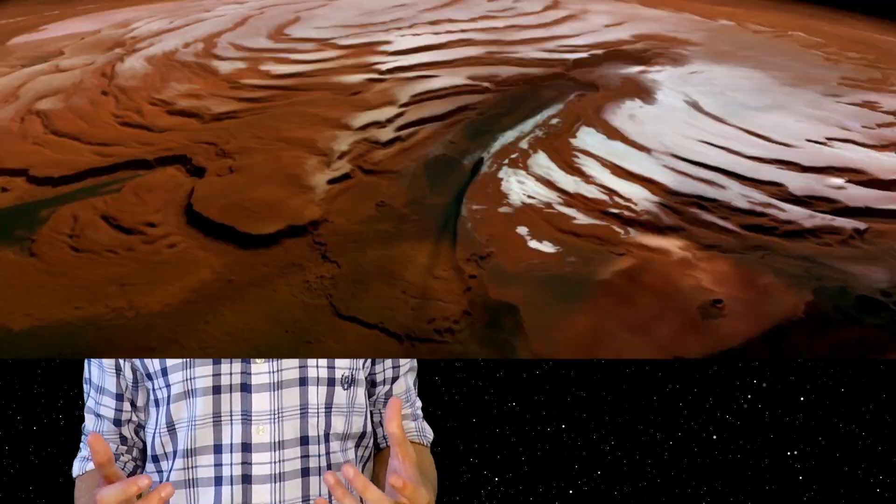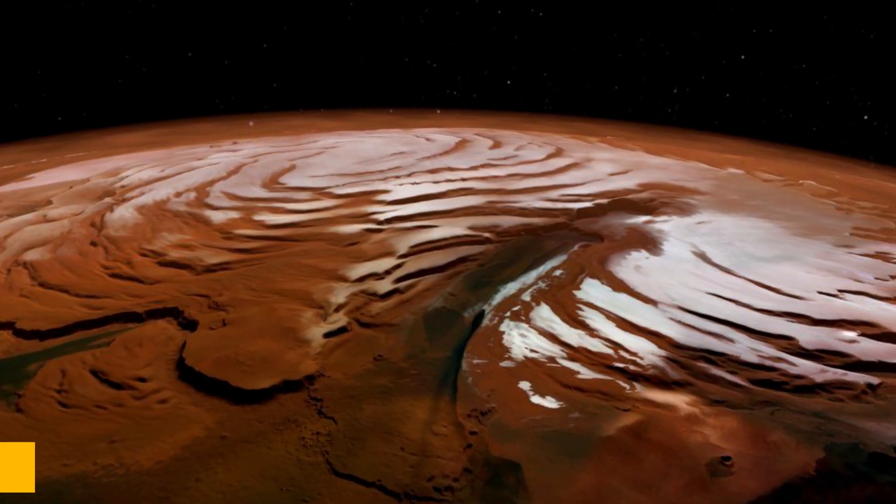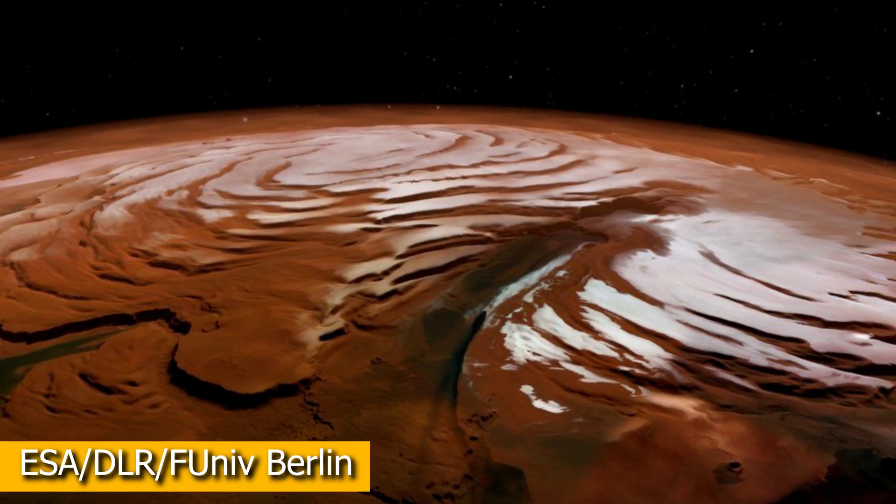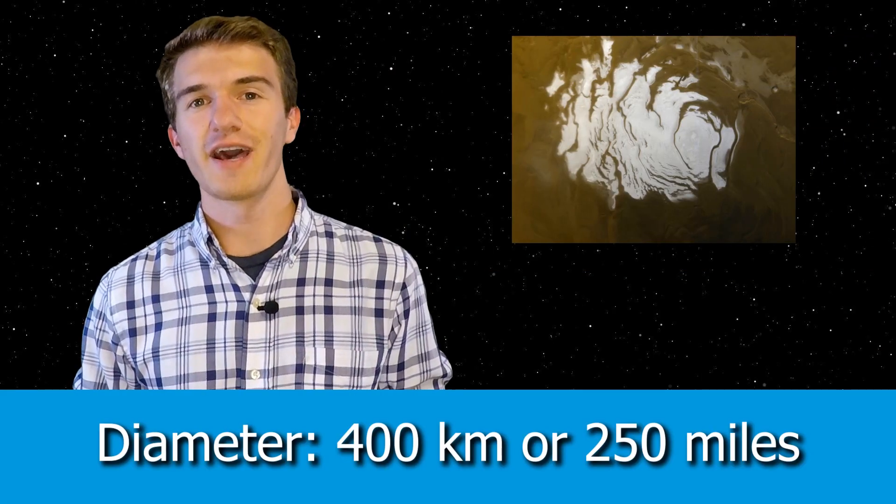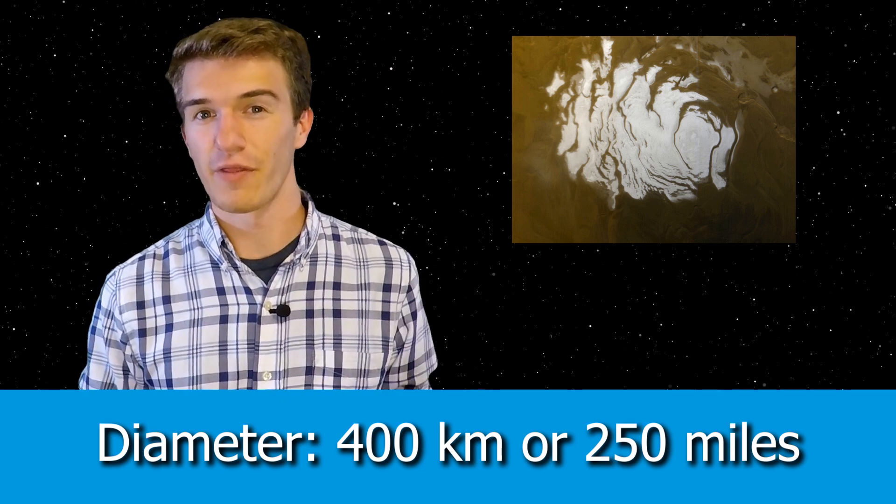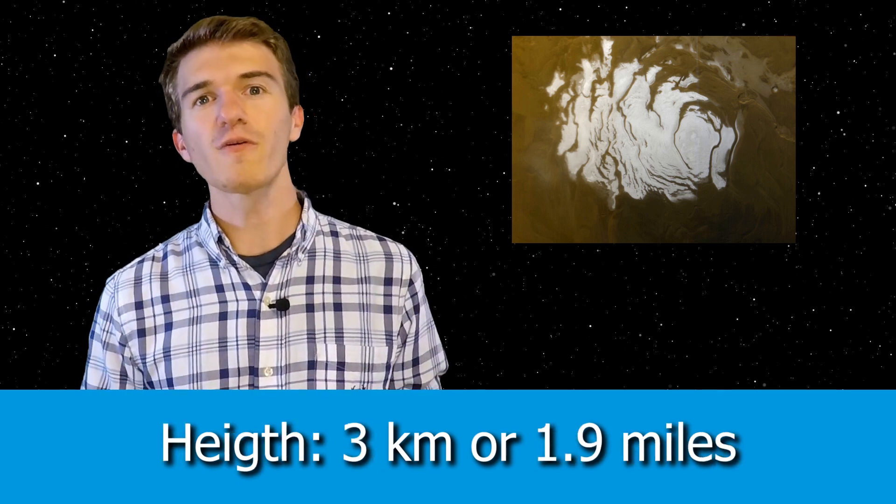Now the ice cap on the south pole of Mars is actually much smaller, being only 400 kilometers in diameter and having a thickness of around 3 kilometers. Therefore it's interesting to note that these are two pretty different sizes in terms of their ice caps. However, to continue on, if we take a look at images of both the ice caps, we notice something very interesting.